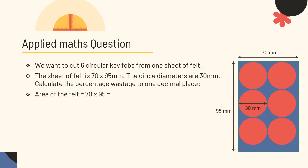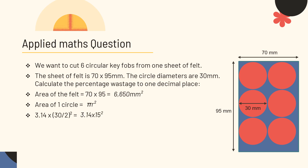First, we want to work out the area of the felt, which is quite simple: that's 70 by 95 — length times width — which comes to 6,650 mm². Next, we want to work out the total area of the circles, starting with just one. To work out the area of a circle, it's πr². We substitute in 3.14 for π, and now the radius — we haven't been given the radius, we've been given the diameter, so the radius is 30 divided by 2, which is 15. So it's 3.14 × 15², which gives us 706.5 mm². Now we've got the area of one circle — we multiply it by six: 6 × 706.5 = 4,239 mm². Check: is that smaller than the total area of the felt? Yes — good, we're on track.